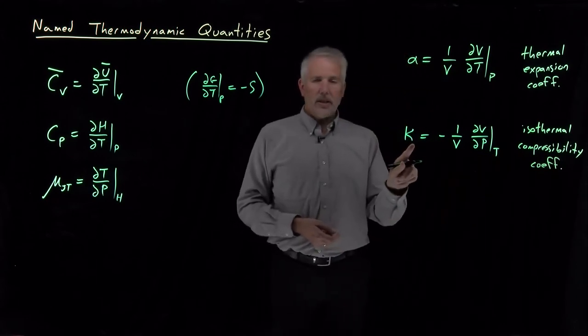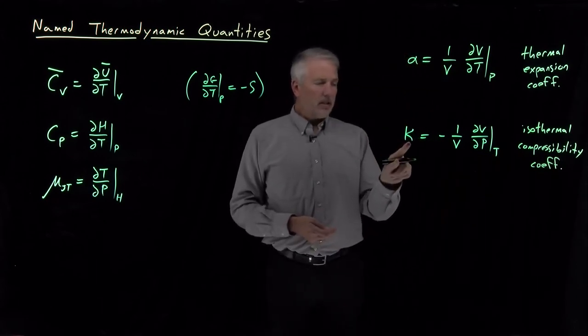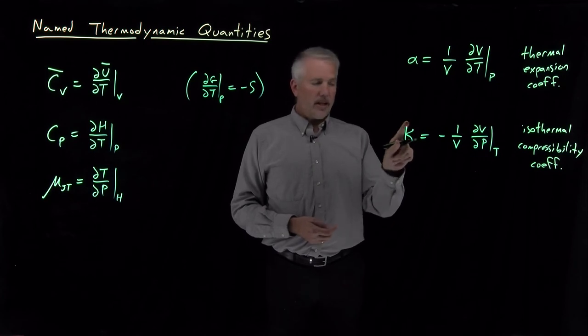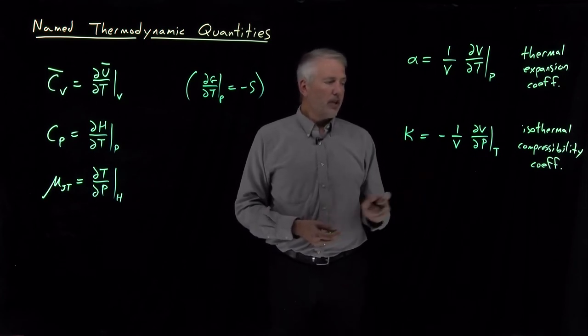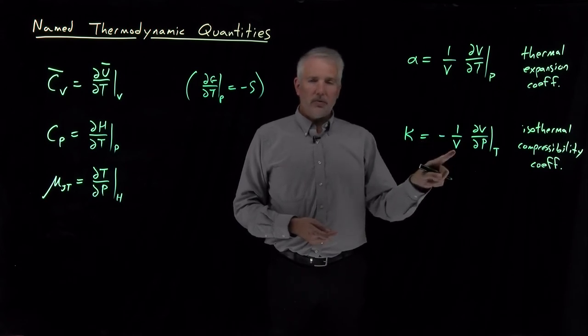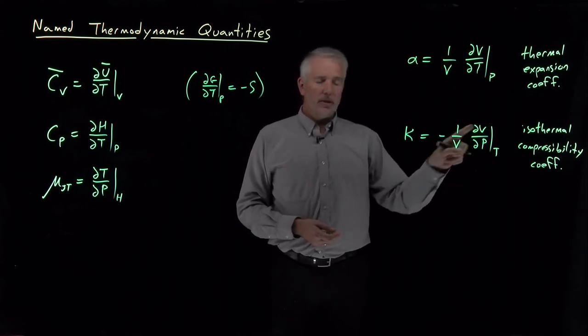This defines the isothermal compressibility or isothermal compressibility coefficient κ. This variable is a Greek letter kappa. It's not a capital K or lowercase k, but Greek letter kappa that's used for the isothermal compressibility coefficient. It also includes this factor of 1/V so that it's an intensive property.